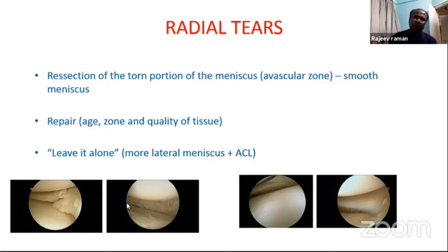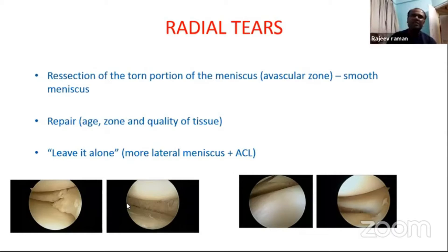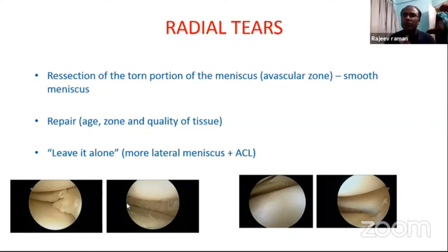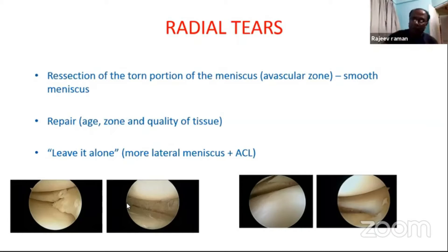Regarding radial tear repair — nowadays some papers and arthroscopic journals support repairing this radial tear. In a young patient with a large radial tear in the posterior horn of the lateral meniscus, you can repair it with a crisscross suture. But failure rates are 20 to 30%, so most radial tears should go for balancing. If it is a small radial tear with an ACL tear, literature supports leaving those tears because the healing rates are quite good.